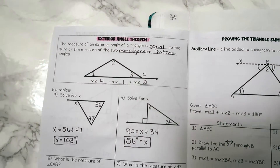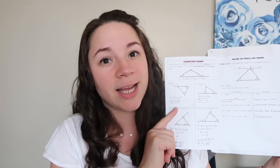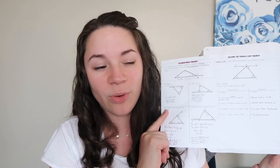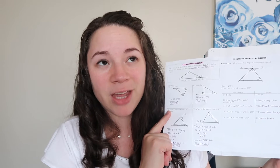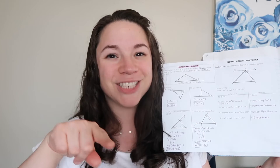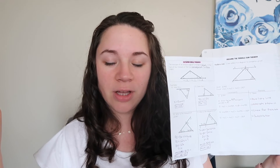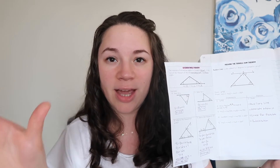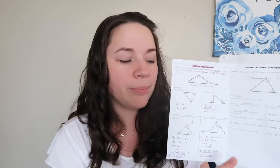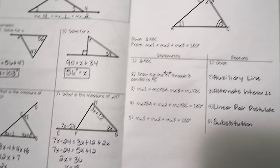For the exterior angle theorem I don't do a paper cutout, but I have done something similar: I traced a triangle on the marker board, drew a line out to extend a side, then tore off the two remote interior angles and showed how they fit into the exterior angle left on the board. We practice with the exterior angle theorem after that.